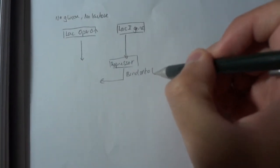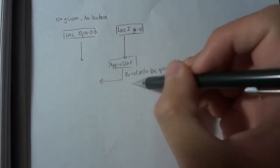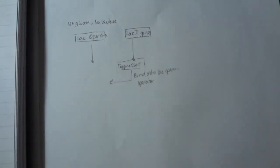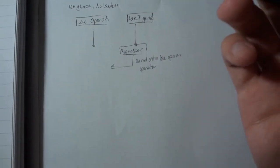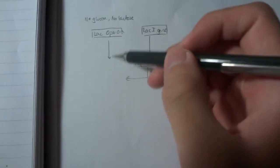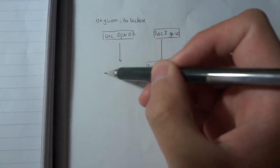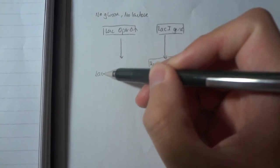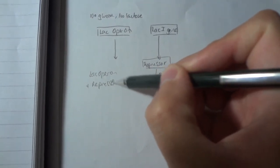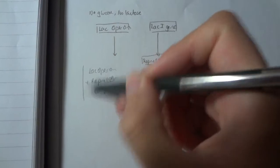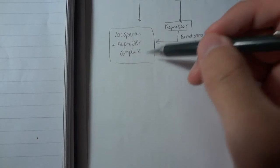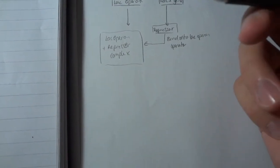This repressor gene binds onto the lac operon on a place called the operator. It basically recognizes the sequence on the operator and sticks onto it. So it sticks onto the lac operon, forming a lac operon plus repressor complex. And this stops RNA polymerase from sticking onto the DNA, which stops transcription.